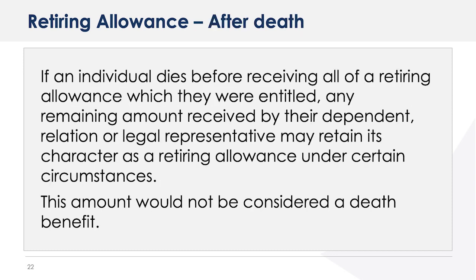If an individual dies before receiving all of a retiring allowance which they were entitled to, any remaining amount received by their dependent, relation or legal representative may retain its character as a retiring allowance under certain circumstances. This amount would not be considered a death benefit. It is possible that the retiring allowance could be included in the retired employee's income for the taxation year of death as a right or thing. For more information on right or thing, please see Guide T4011, Preparing Returns for Deceased Persons.